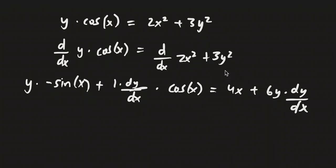We got 6 times y because of the 3y squared — we brought the 2 down, 3 times 2 is 6, times y to the power of 2 minus 1 which is just 1, so 6 times y to the power of 1 is just 6y. Then we tag on that dy/dx since we have a term that has y in it.